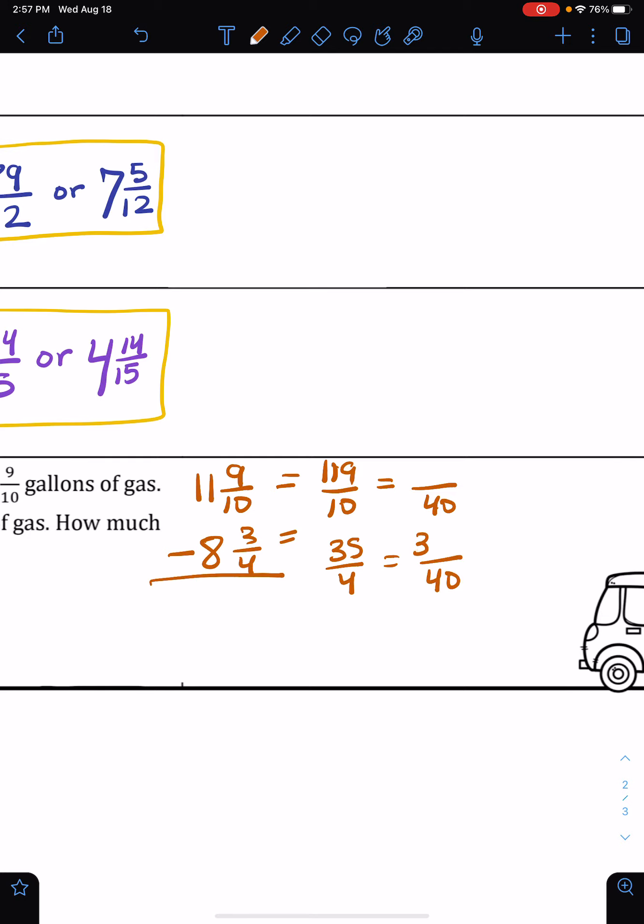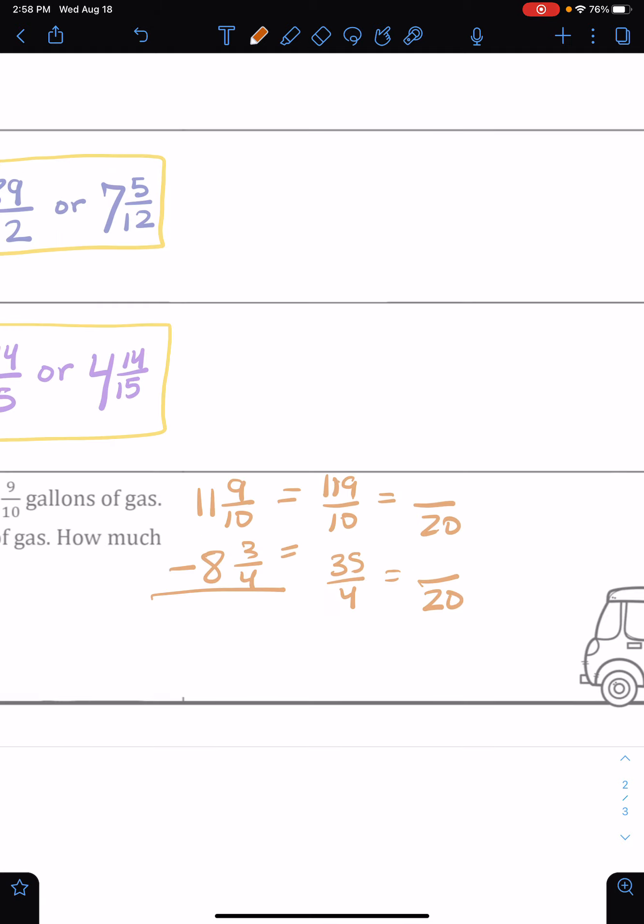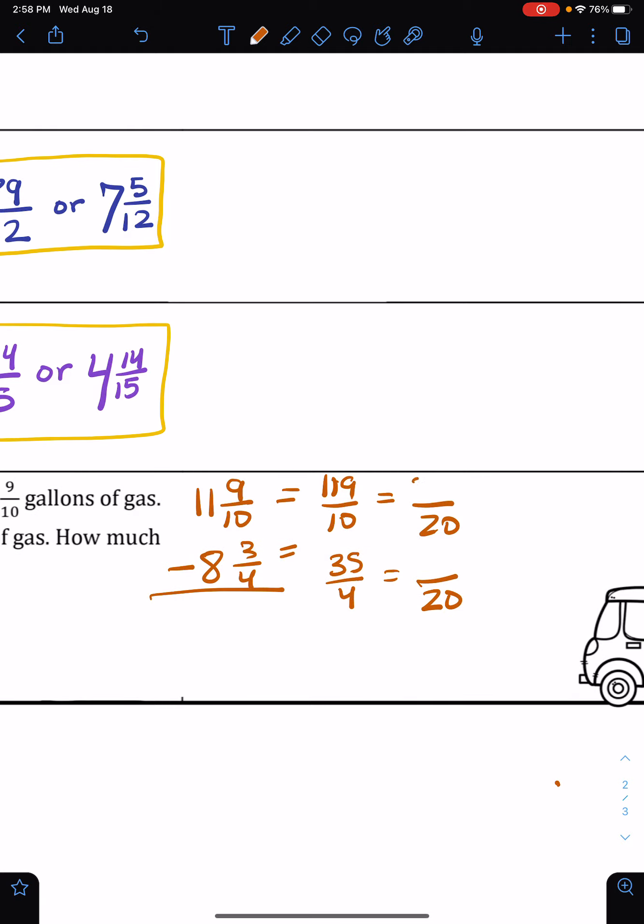So I multiplied by 10 here. Oh wait, you know what, that is a common denominator, 40, but it's not the least common denominator. It'd be better to use 20 because we're working with smaller numbers that way. So I'm going to multiply 119 times 2 to get 238, and 35 times 5 to get 175. And remember, I'm subtracting, so 238 minus 175 is 63. So 63 twentieths.